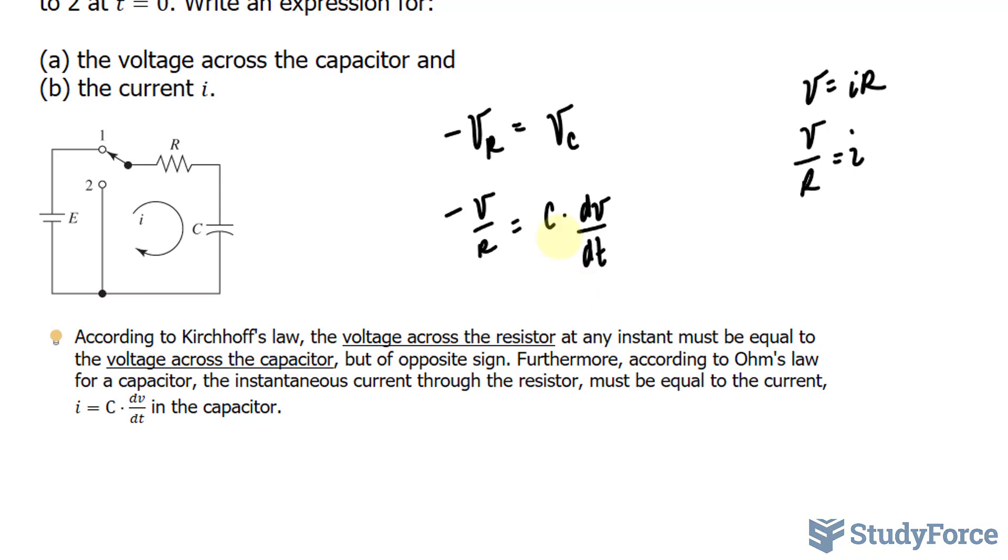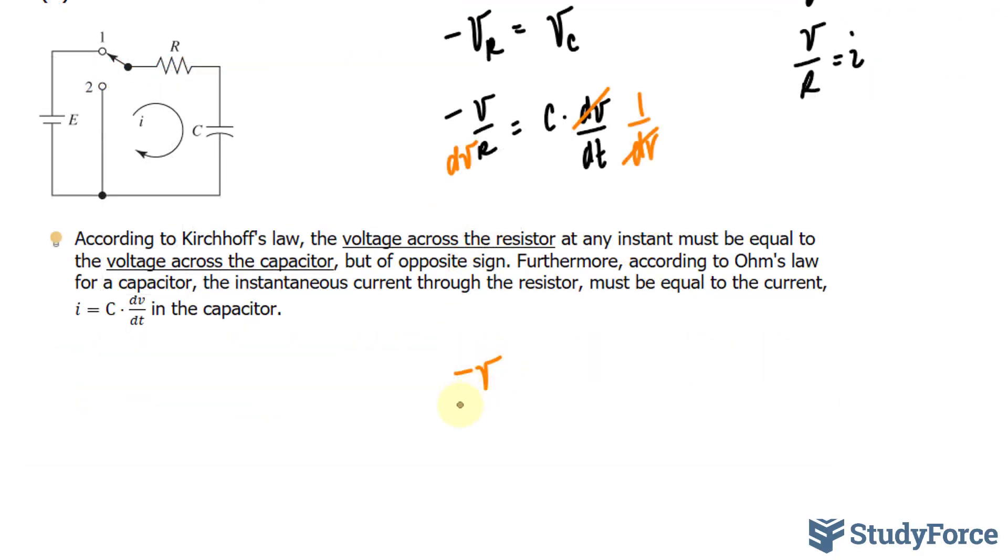The first thing that I want to do is divide both sides by dV. Take a look at what I mean. I'll divide the right side by dV. This cancels out this dV. And on the left side, I have negative V over R times dV. Negative V over R times dV is equal to C over dt.